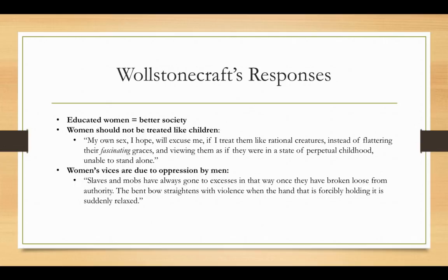Next, she says that women should not be treated like children. There is a running theme throughout human history and literature of women being infantilized — treated by men the same way that children are, as incapable of making their own decisions or knowing what's best for themselves. Mary Wollstonecraft says we should stop this, because women are adults and complete people just like men. She writes: "My own sex, I hope, will excuse me if I treat them like rational creatures instead of flattering their fascinating graces and viewing them as if they were in a state of perpetual childhood, unable to stand alone." Many men treated women like children as a kind of backhanded compliment — saying they were too gentle and delicate to be concerned with adult matters — but essentially they were keeping women from adult society.